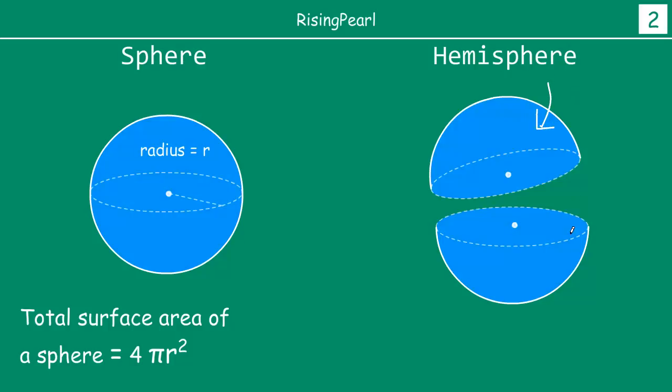Hemisphere, so this is one hemisphere and this is the second hemisphere. So hemisphere is nothing but, it is half, hemi means half sphere. So sphere is a whole sphere and hemisphere is half a sphere. So each one of them will be a hemisphere.